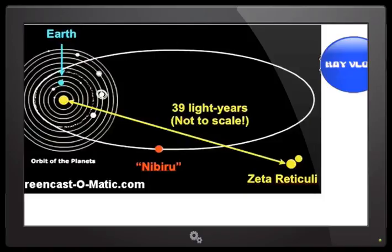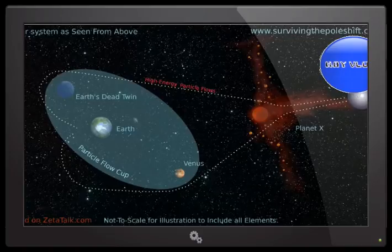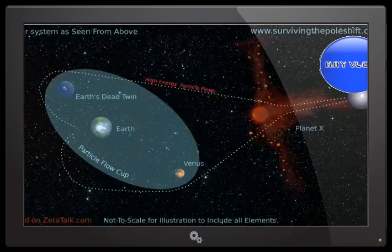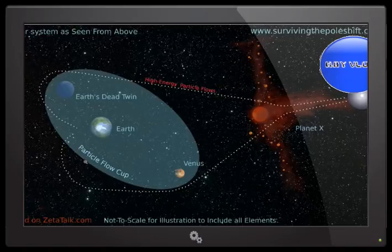Now, I want to go to another one of my drawings. This one. So this is Planet X. That's the sun. This is Earth. This is Venus. And this is Earth's dead twin. This light blue, this light circle here is called the Zeta cup. The Zetas call it the cup.